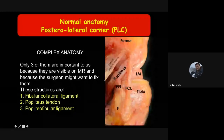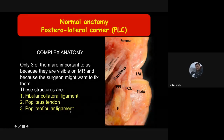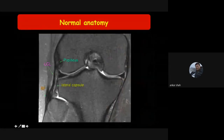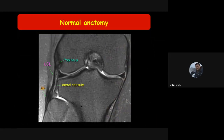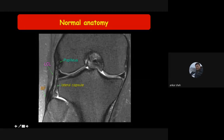The more important corner is the posterolateral corner (PLC), formed by the fibular collateral ligament, popliteus tendon, popliteofibular ligament, and the arcuate ligament (a condensation of the joint capsule). Whenever there is an ACL tear with associated posterolateral corner injury that is not treated, the chances of the ACL repair failing are much higher. So you must address the PLC injury whenever it is injured along with the ACL.